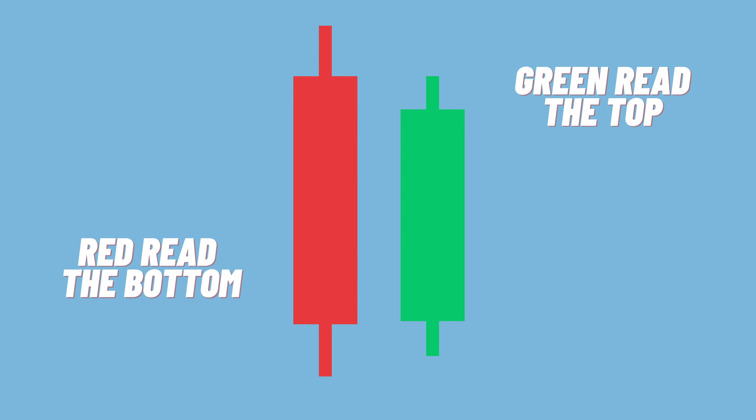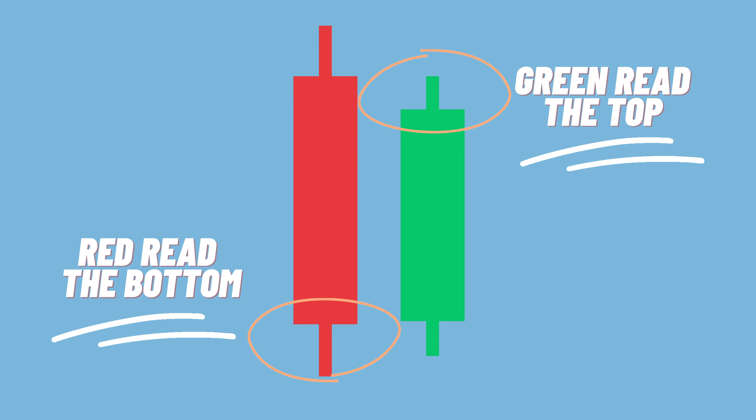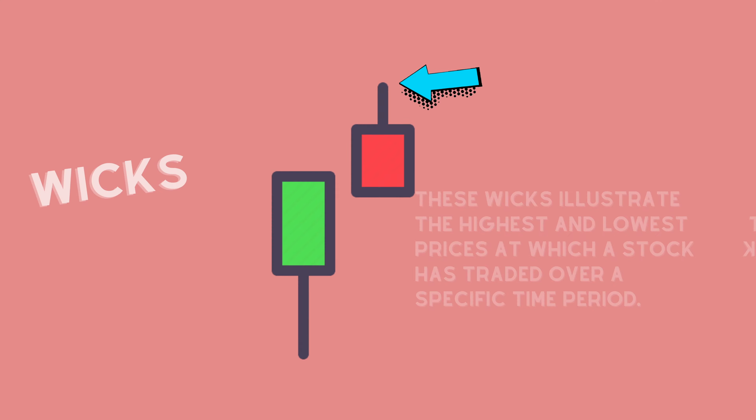Another quick tidbit for reading these, which I thought was awesome and so easy and simple: when you're reading a green candlestick, you're reading the top part of the box because it's like a rectangle. When you're reading a red one, you're reading the bottom. So you're going to read the top of a green and the bottom of a red.